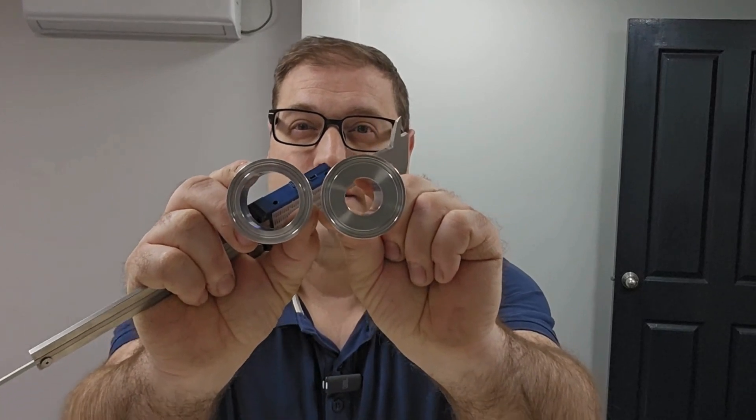This is incorrect, as some triclamp sizes have the same flange outer diameter, such as one inch and one and a half inch, as you can see here.